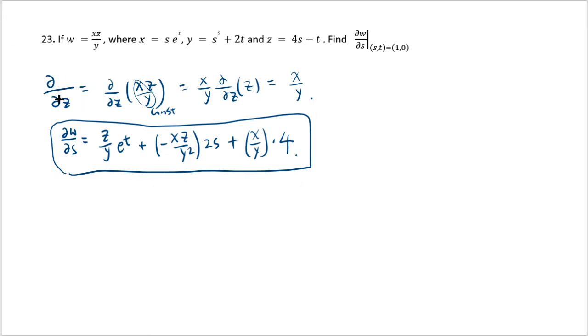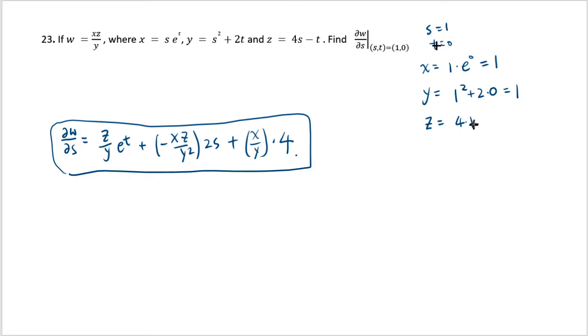So I have to evaluate this thing I boxed with s being 1 and t being 0, which means I have to figure out what happens to x, y, and z. So when s is 1 and t is 0, you get x equals to 1 times e^0, which is 1. y equals 1² plus 2 times 0 equals 1, and z equals 4 times 1 minus 0, and that's equal to 4. So I found out the values for x, y, and z when s is 1 and t is 0, and that's almost all we need.